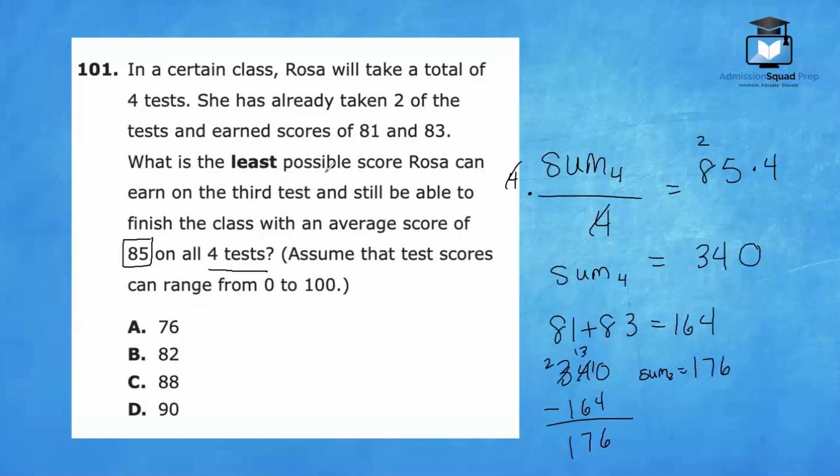Therefore, the sum of these two remaining exams is 176. So the question is, what is the least possible score Rosa can earn on the third test and still be able to finish the class with an average score of 85? So the maximum score that she can receive on one of the exams is 100. So I will subtract 100 from 176, and we have 76 as the lowest possible score that she can have on the third exam. So A is the correct answer. Remember, the sum of the two exams has to be 176, so we want to maximize one of the scores so we can minimize the other score. The maximum possible score is 100, therefore there are 76 possible points remaining for the other exam.